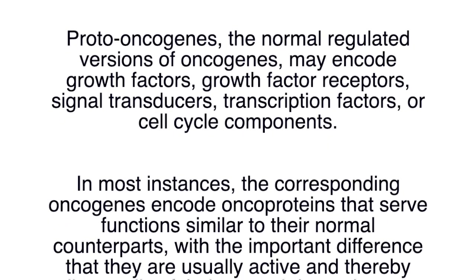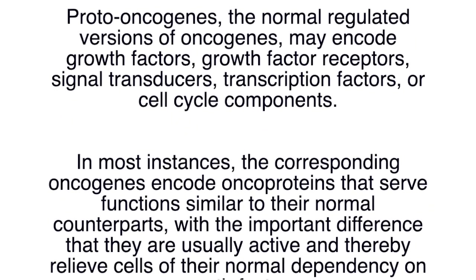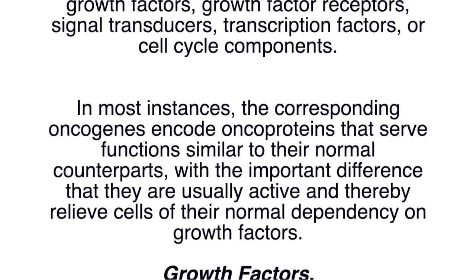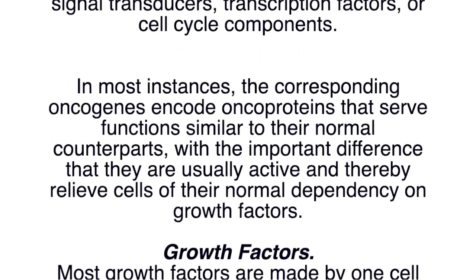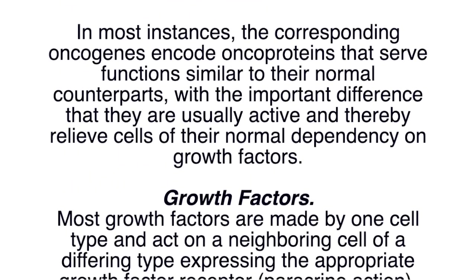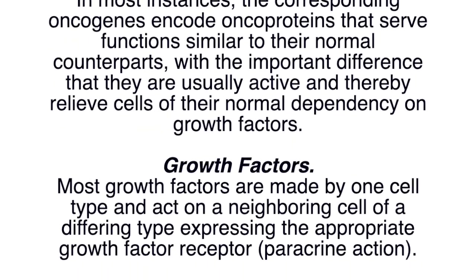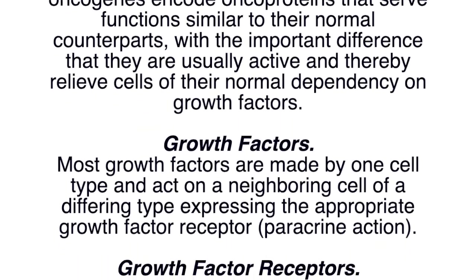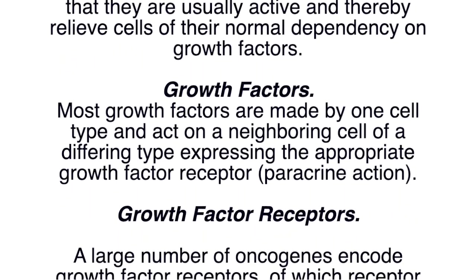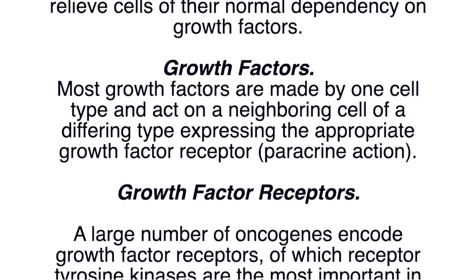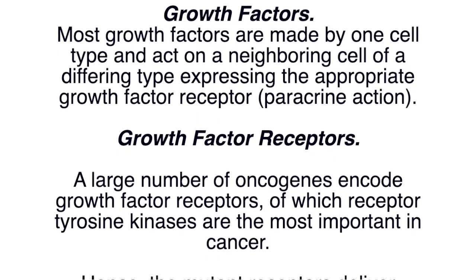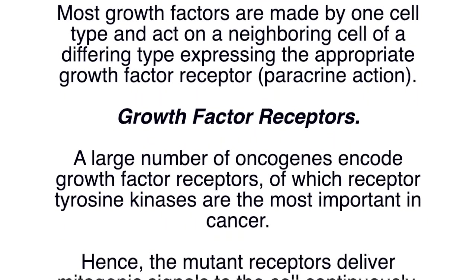In most instances, the corresponding oncogenes encode oncoproteins that serve functions similar to their normal counterparts, with the important difference that they are usually active and thereby relieve cells of their normal dependency on growth factors. Most growth factors are made by one cell type and act on a neighboring cell of a differing type expressing the appropriate growth factor receptor. This is known as paracrine action.